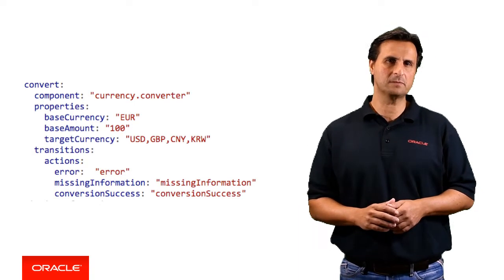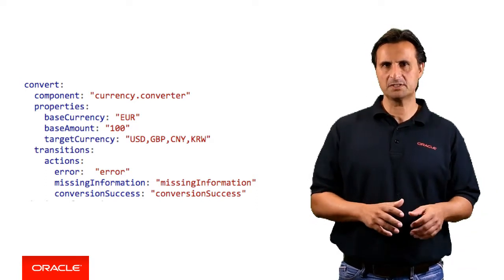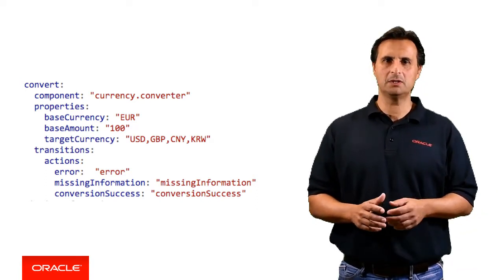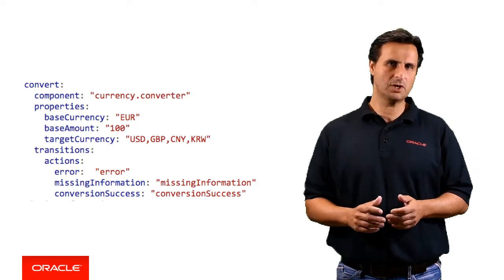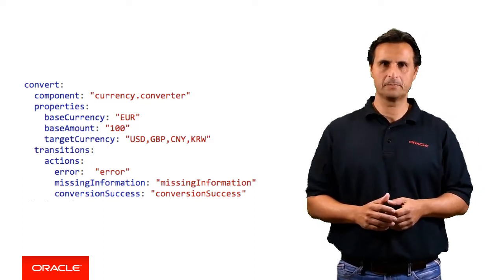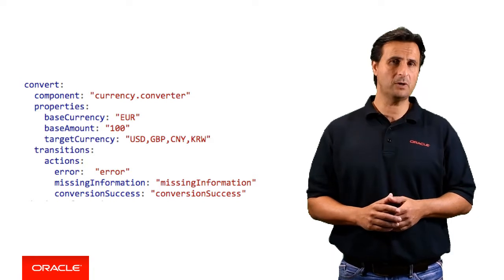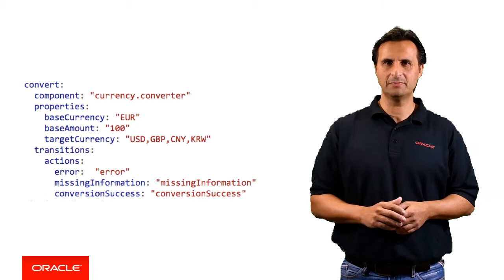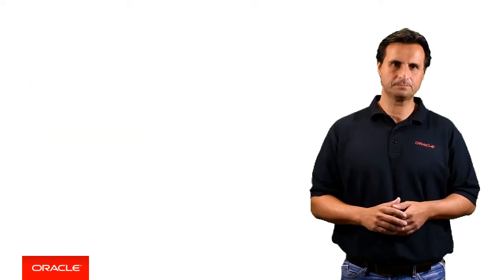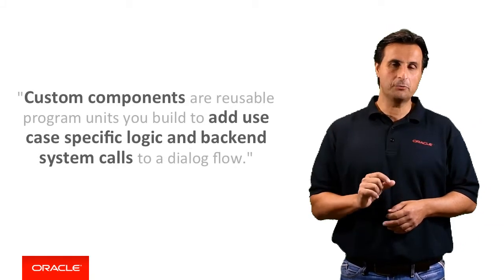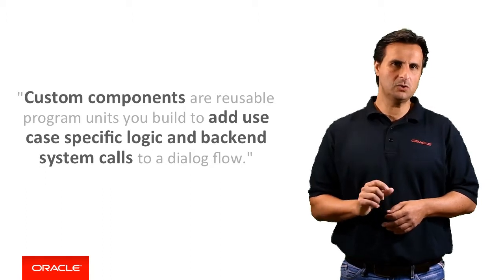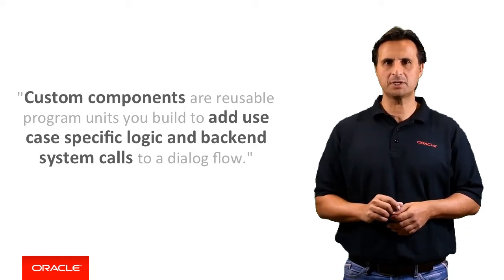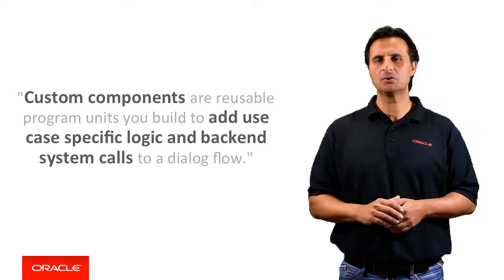In this example, the custom component is a currency converter that converts 100 euro into US dollar, British pound, Chinese yuan, and South Korean won. And because it's a custom component, you as a bot designer immediately know how to put that into your bot and into action in your dialogue flow. To coin a very crisp definition: custom components are reusable program units you build to add use case specific logic and backend system calls to your dialogue flow.